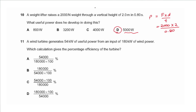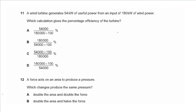Question 11 says a wind turbine generates 54 kilowatts of useful power from an input of 180 kilowatts of wind power. Which calculation gives the percentage efficiency? That would be the output divided by the input times 100. The correct option has output divided by input with 100 at the top, so choose C.